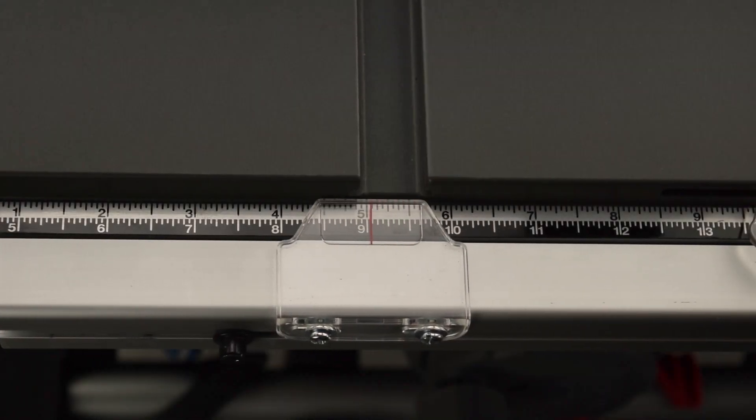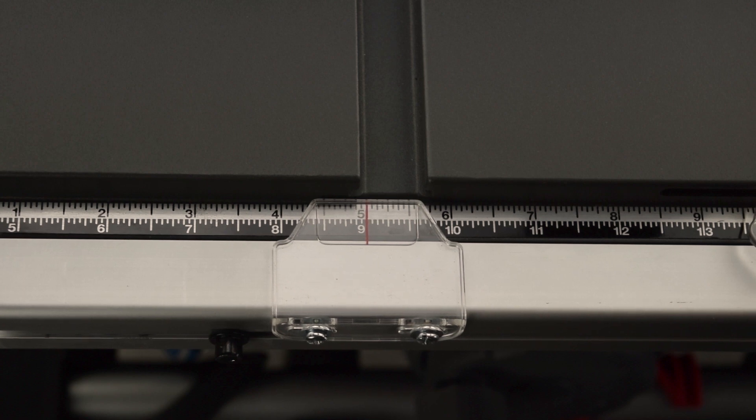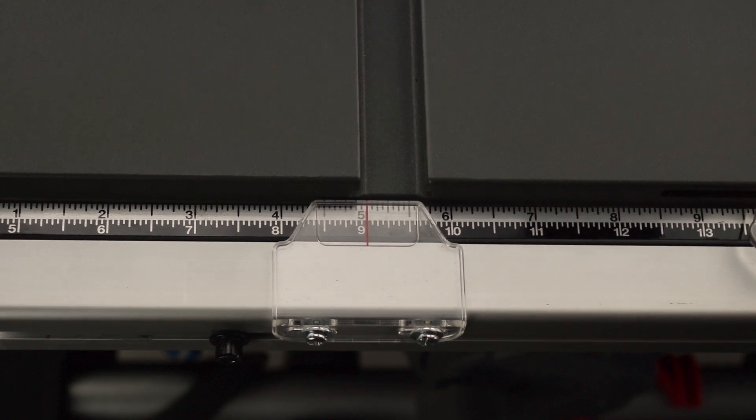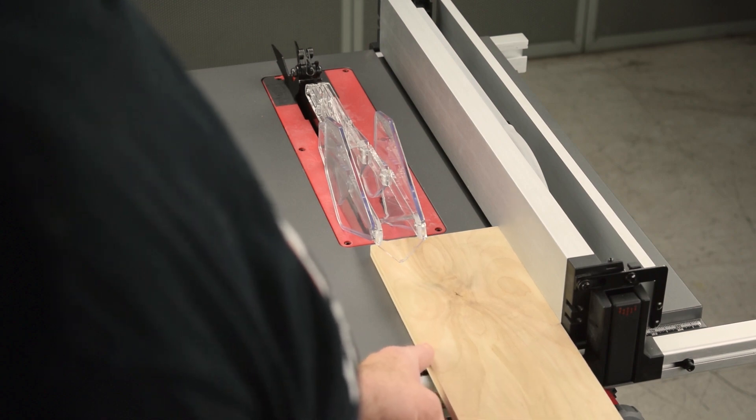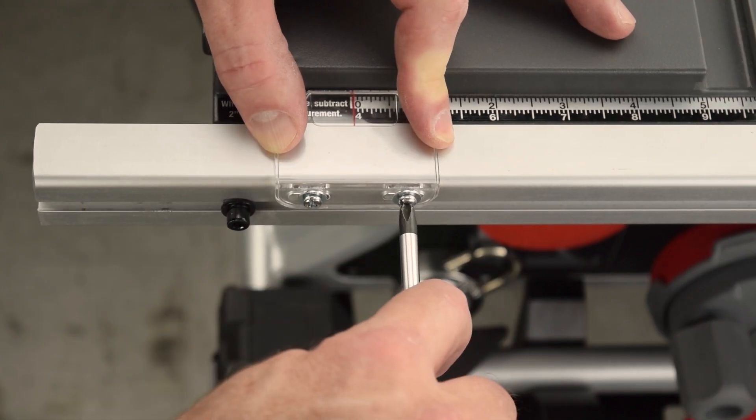This video shows you how to calibrate the position indicator for your SawStop Compact table saw. You use the position indicator to set the width for rip cuts. You need to periodically confirm calibration.